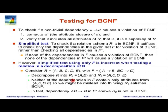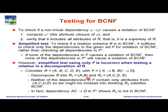Let F be A→B and BC→D, and R be ABCDE. The very first dependency A→B shows that this violates BCNF — A+ is just AB, not a super key. Therefore we must decompose. We decompose into AB and ACDE.